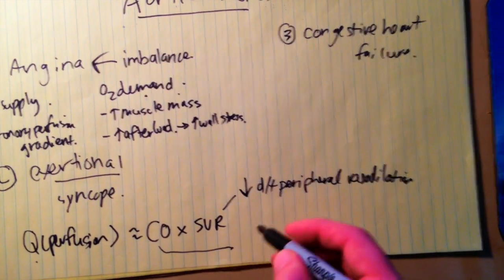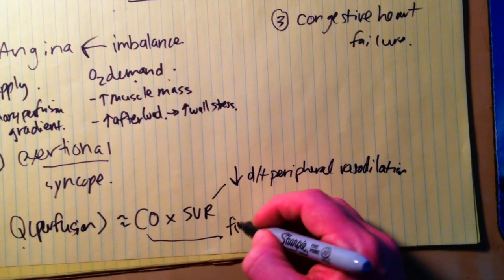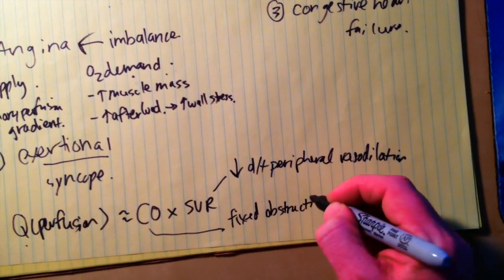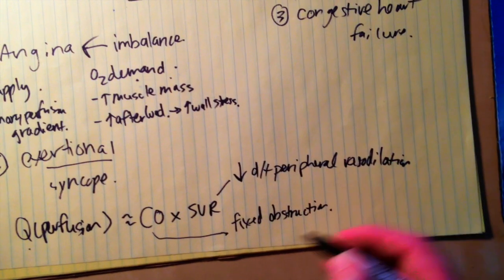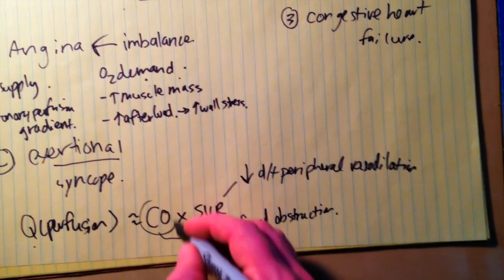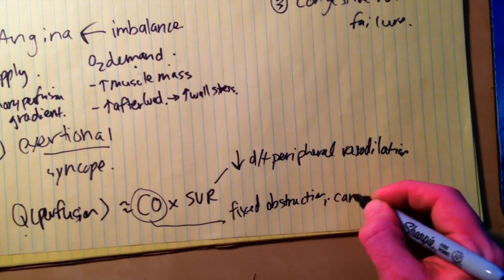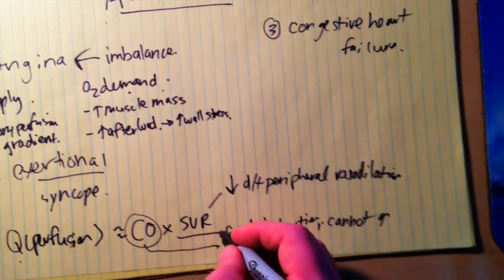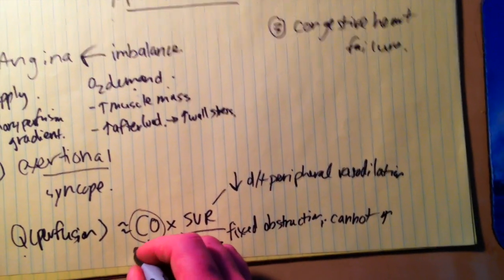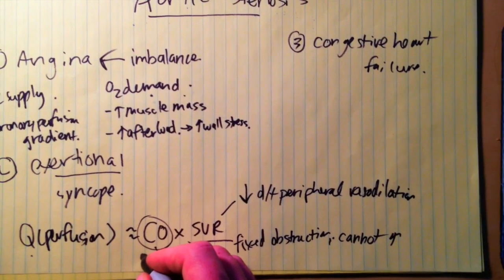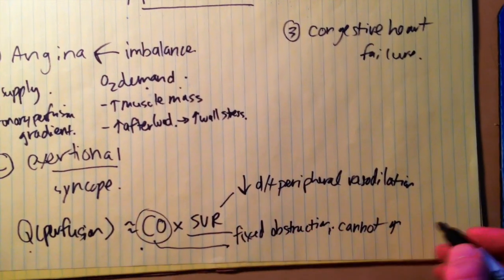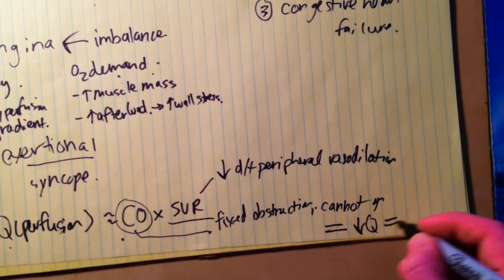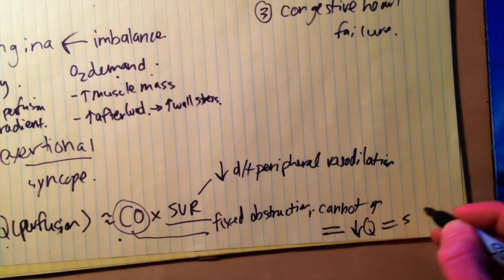The problem is that with a fixed obstruction from aortic stenosis, cardiac output cannot compensate — it cannot increase. So you have a drop in SVR and a cardiac output that remains the same, which equals a drop in perfusion, leading to syncope.